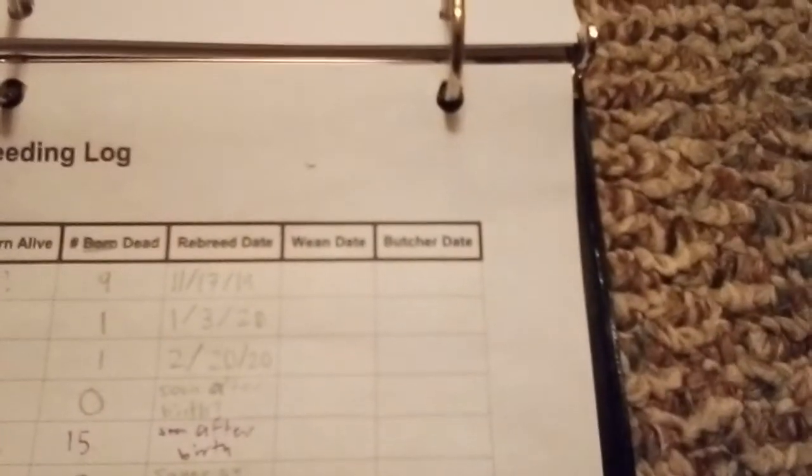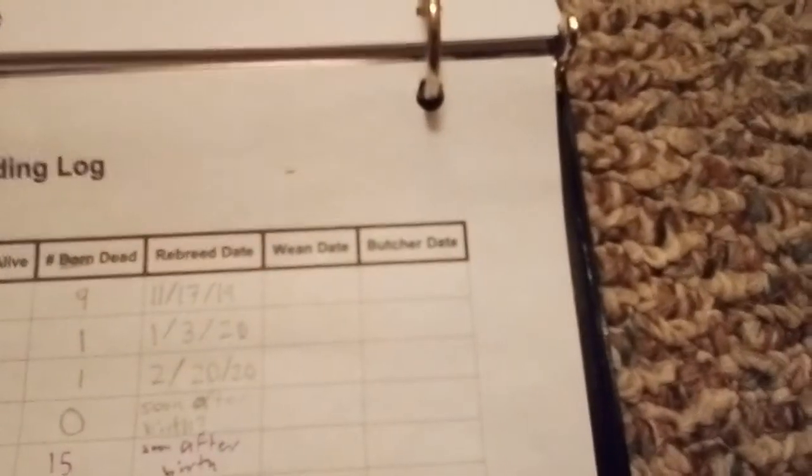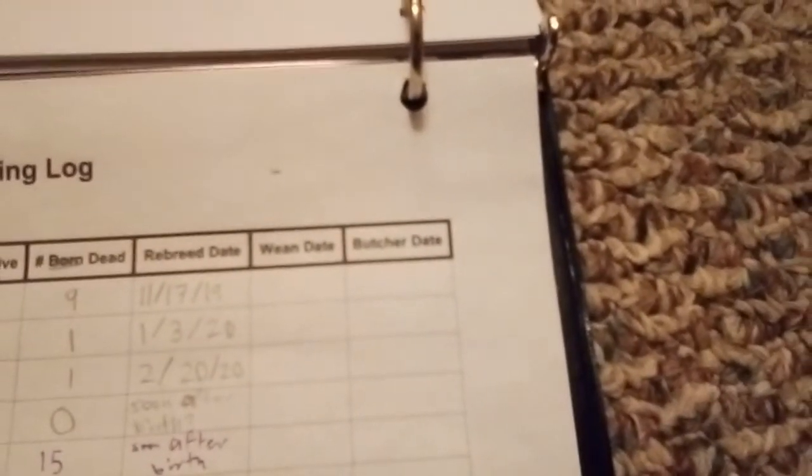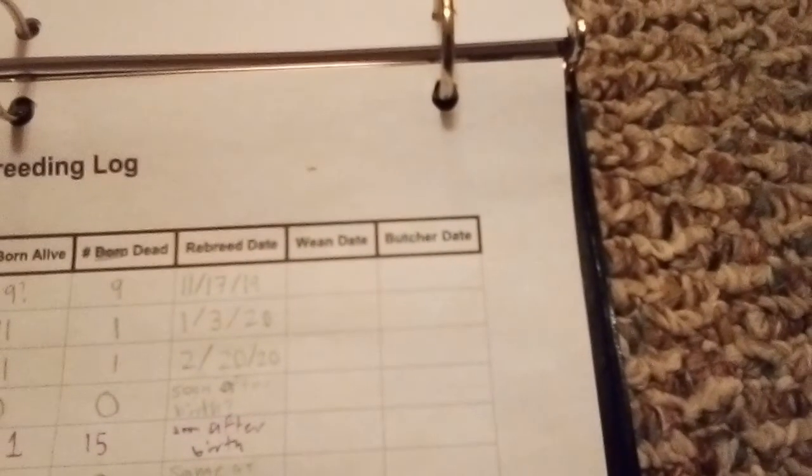Butcher date is blank because we butcher by weight and not age. Different litters, different moms, different dads, different times of year - in the summer they're eating a lot of grass, in the winter they're eating a lot of feed so they grow differently. It goes more by weight, whenever they reach five pounds. We go by how much they weigh.